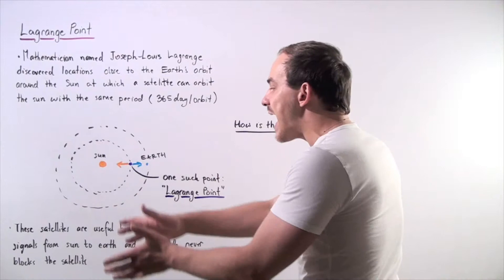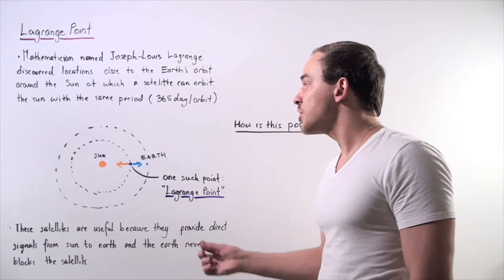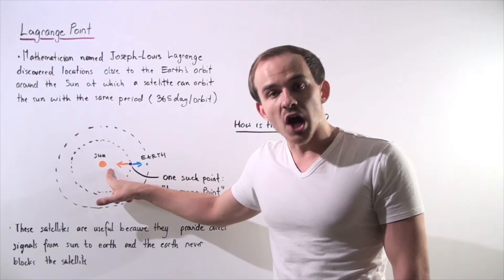Now, these satellites are useful because they provide direct signals from the sun to the Earth, and the Earth does not actually obstruct the satellite. The satellite is always open to the sun.